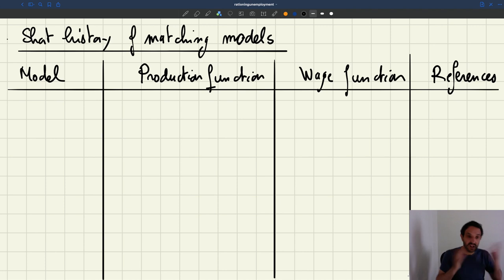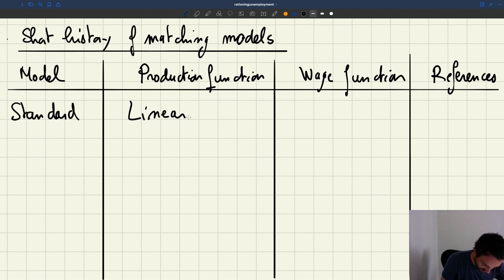So the classical model, the standard matching model, which is the first version of the model that was developed. In terms of production function, what was assumed was a linear production function. That gives you an output Y which is equal to A, the labor productivity, it's a parameter times N, the number of producers in the firm.